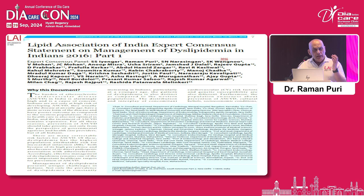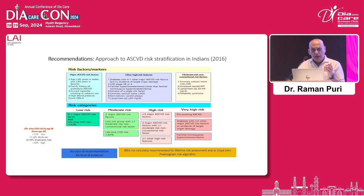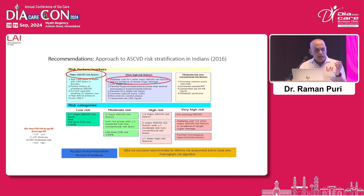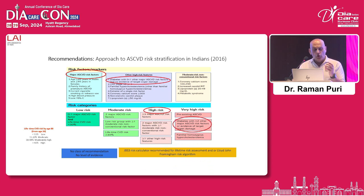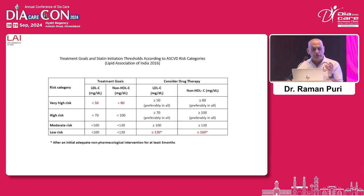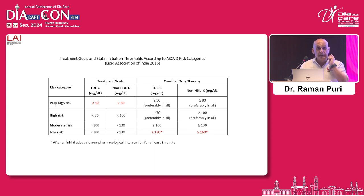In 2016, we came out with our first expert consensus statement. We classified patients of diabetes with no or one ASCVD risk factor or no target organ damage as the high-risk group, recommending an LDL cholesterol goal of less than 70 mg. Patients with target organ damage or two or more ASCVD risk factors were classified as the very high-risk group with a target of LDL cholesterol less than 50 mg. We were one of the first associations in the world to recommend LDL cholesterol less than 50 mg, based on strong scientific evidence.